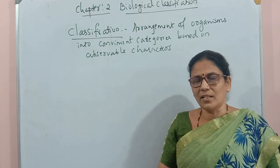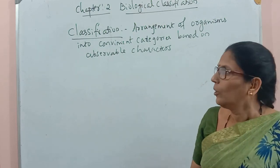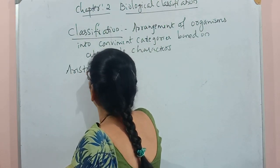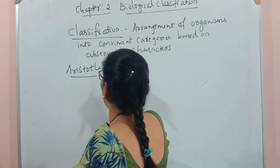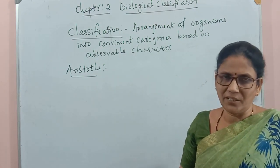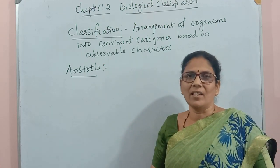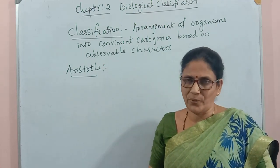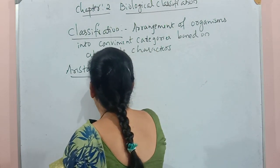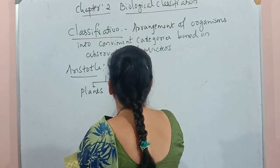Now let us discuss how classification started and progressed. We will start with Aristotle's classification. Based on some very simple characters, Aristotle classified whole organisms into two groups. He divided all organisms into two groups: one group is plants and another group is animals.